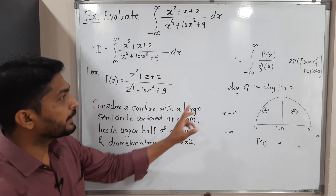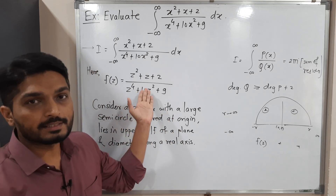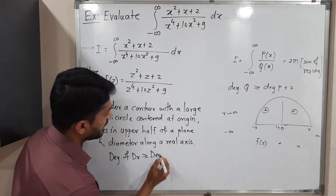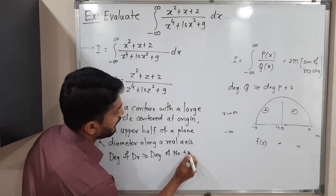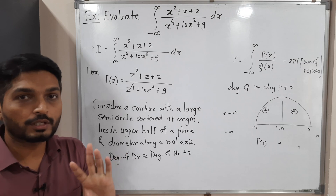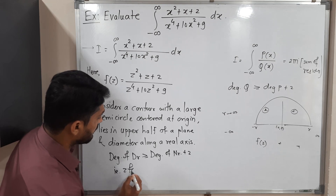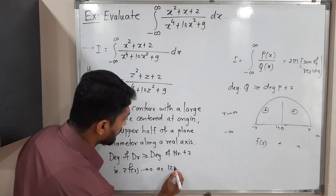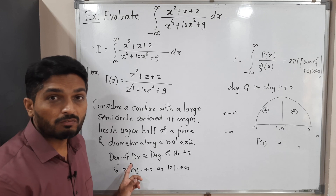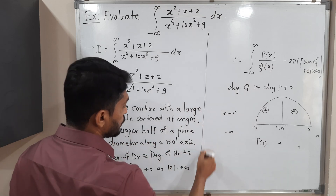We check that the degree of the denominator is greater than or equal to the degree of the numerator by 2. The power of the denominator is 4 and the numerator is 2, so the difference is at least 2 — this condition is satisfied. Equivalently, z·f(z) tends to 0 as |z| tends to infinity. Both statements have the same meaning.